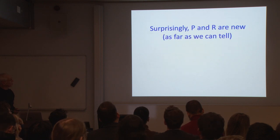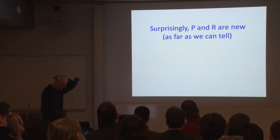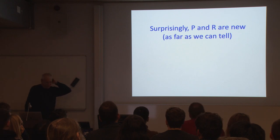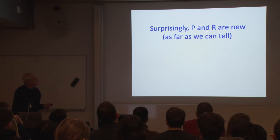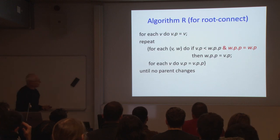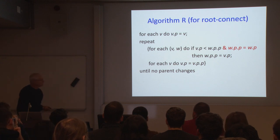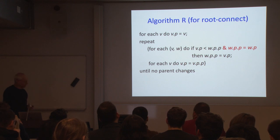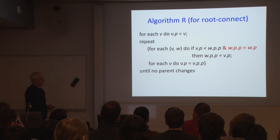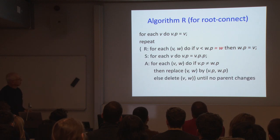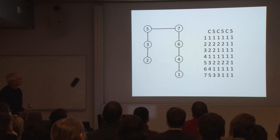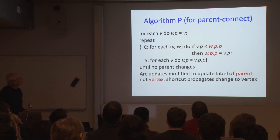Algorithm R runs in logarithmically many rounds — log n — using a linear number of processors, one per arc and one per vertex. It seems to be extremely fast in practice, and it's very minimalistic. Algorithm P is simpler, but we don't know how to prove anything about it.